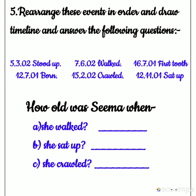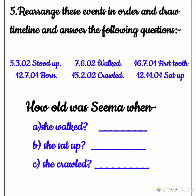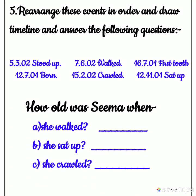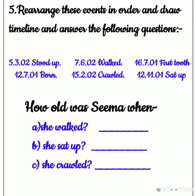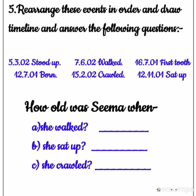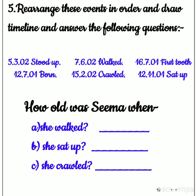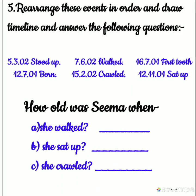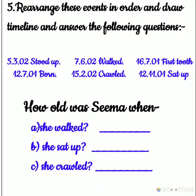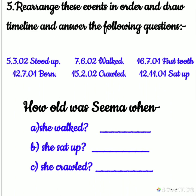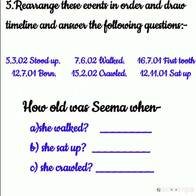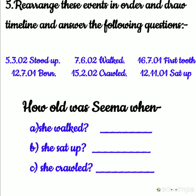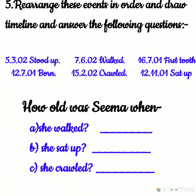Now coming to question number 5: rearrange these events in order and draw a timeline and answer the following questions. Neeche kuch events likhe hain jaise ki kab paida hue — born, stood up, walked, first tooth, crawled, then sat up. Toh in events ko aapko sahi order mein lagana hai ki pehle kya hua, uske baad kya hua. Date se aapko pata chal jaayega ki pehle kya hua. Aur uske baad ek timeline draw karke usme in events ko likhna hai.